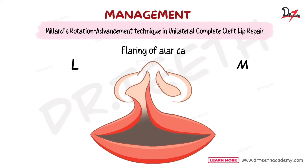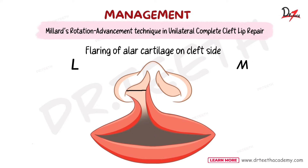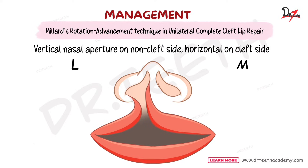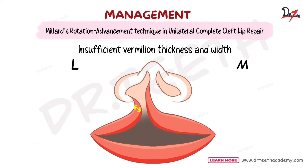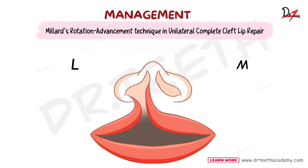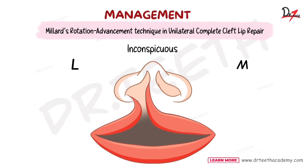There is flaring of the alar cartilage on the cleft side. The nasal opening is vertical on the non-cleft side while it is horizontal on the cleft side. Looking at the lip, there is insufficient vermilion thickness and width, no nasal seal on the cleft side, and an inconspicuous white roll.